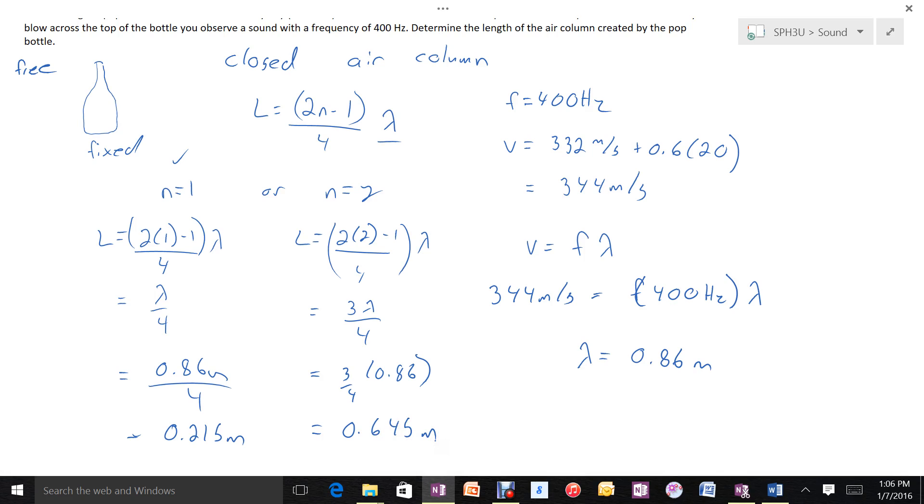Let's try n equals 2 and see how that works out. If you remember the pattern, it's 3 lambda over 4. Otherwise, use the full equation. This gives 0.645 meters.